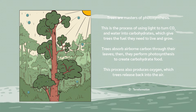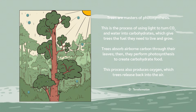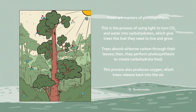Trees absorb carbon through their leaves. Then they perform photosynthesis to create carbohydrate food. This process also produces oxygen, which trees release back into the air.